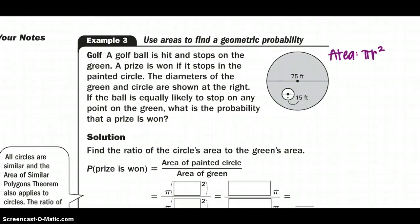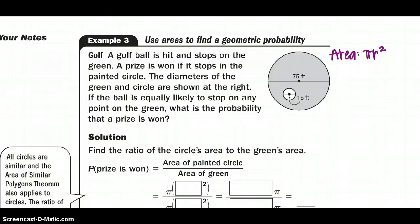Alright, so we are going golfing. And that is not my best sport, but that's okay. So the golf ball is hit and stops on the green. A prize is won if it stops in the painted circle. So here's our painted circle. If the ball stops in that painted circle, we win a prize. The diameter of the green and circle are shown at the right. If the ball is equally likely to stop in any point on the green, what's the probability that a prize is won?